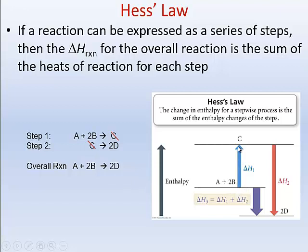Looking at the energy diagram: the first step, A reacting with 2B, absorbs energy from the surroundings. The second step, C reacting to form 2D, releases much more energy to the surroundings. So the overall reaction goes down in energy, releasing heat to the surroundings. We can express this as: ΔH₃ (the overall reaction) equals ΔH₁ plus ΔH₂. Since ΔH₂ is a large negative number, the overall reaction has a negative ΔH — heat is released to the surroundings.